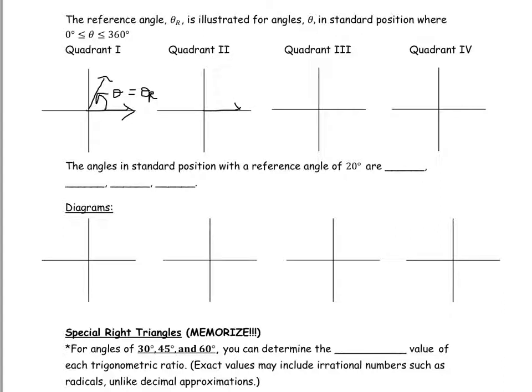In quadrant two, for an angle that terminates in quadrant two, the reference angle is from the terminal arm to the nearest x-axis. In quadrant two, the reference angle and the angle in standard position theta add up to 180 degrees. So if we know one, we can always find the other.